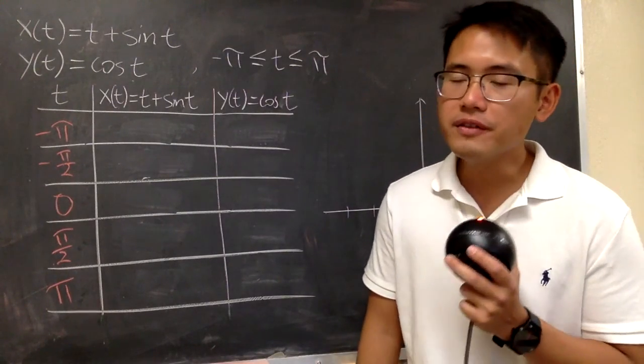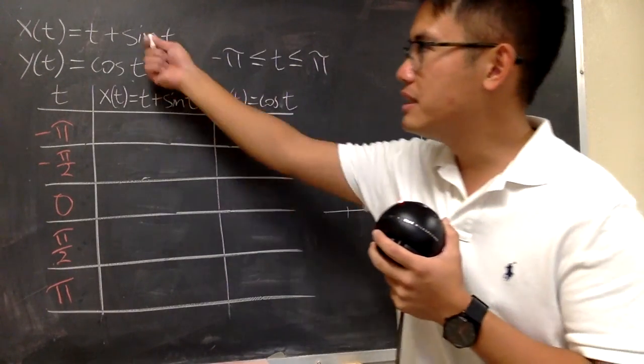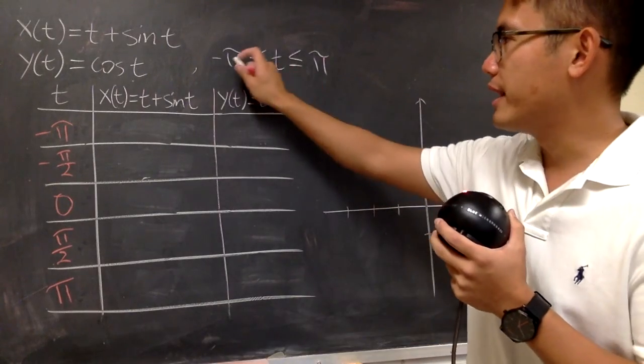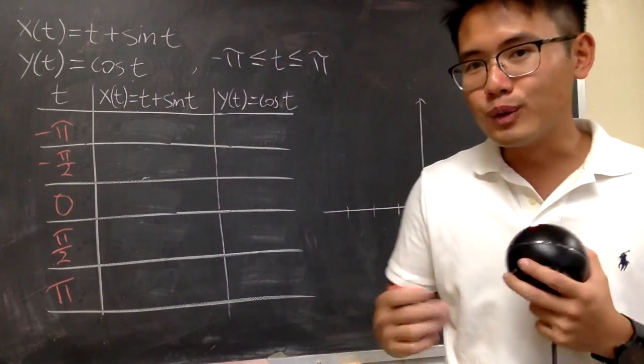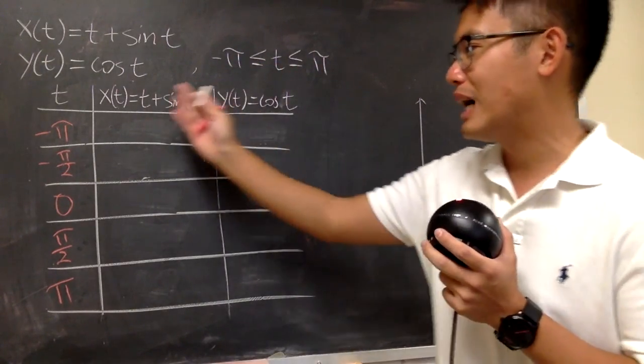Okay, in this video, I'll show you guys how to graph a curve defined by parametric equations, this and that, and we want to go from negative pi to pi. So we just have to do the dirty work, meaning that we have to set a table.